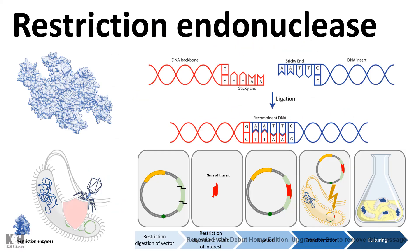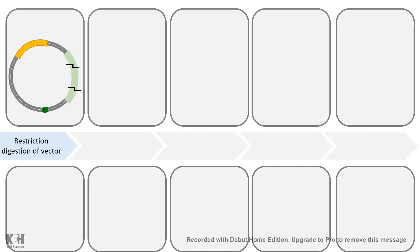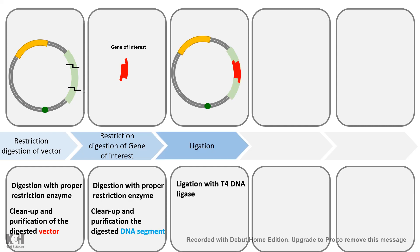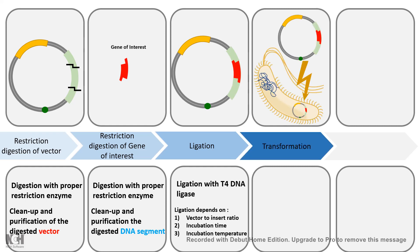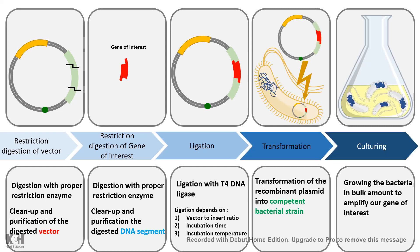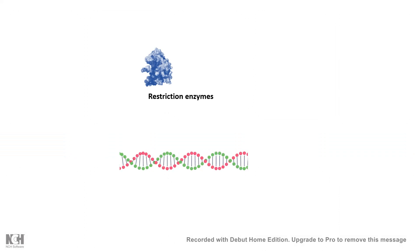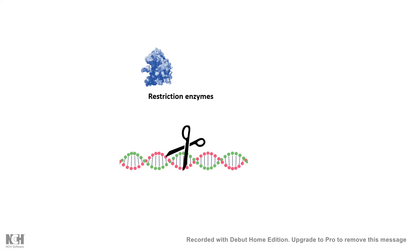First, let's talk about restriction endonuclease enzymes. If you remember the workflow of cloning, first we have to restriction digest our vector or plasmid. The restriction endonuclease works like a molecular scissor. Then our gene of interest is also clipped with the same restriction enzyme, followed by a ligation step, and then it is transformed into bacteria. As the bacteria grow, our gene of interest also grows with them.